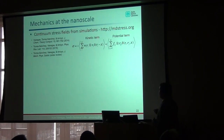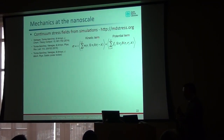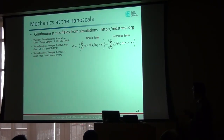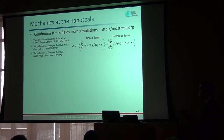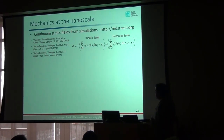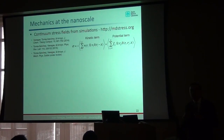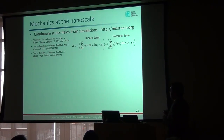I developed code available on our website — implemented in a couple of different codes — for obtaining continuum stress fields from MD simulations. The basic idea is that you have a kinetic term — the kinetic portion of the stress, like a kinetic pressure, similar to the ideal gas contribution — and a potential term coming from the different inter-particle interactions. These particles interact with each other and exert forces on each other, and you can obtain a stress from that component.